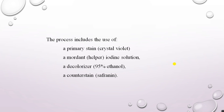The process of differential gram staining includes four basic reagents: a primary stain — crystal violet; a mordant, also termed a helper, which helps the primary stain bind to the cell wall — that is iodine solution or Gram's iodine; a decolorizer — 95% ethanol; and finally a counter stain — safranin, or neutral red can also be used.